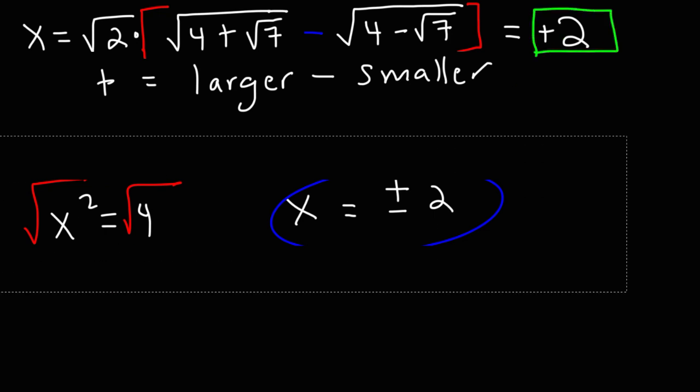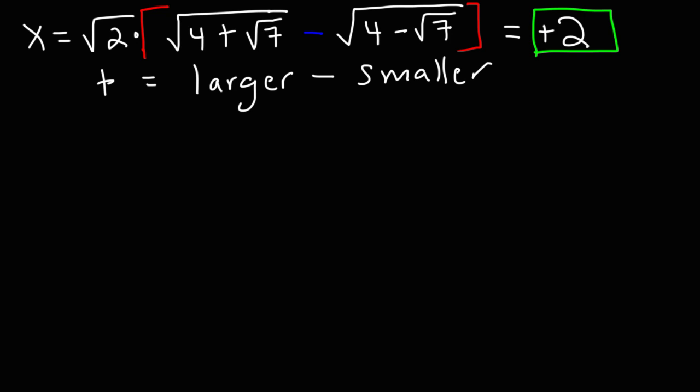We can confirm that with a calculator. Type in the original expression: square root of 2 times, open parentheses, the square root of 4 plus the square root of 7, minus the square root of 4 minus the square root of 7. You're going to get exactly positive 2. That's what this entire expression simplifies to. It's really not that bad, but it does require some intuitive thinking to simplify what appears to be a complicated expression.